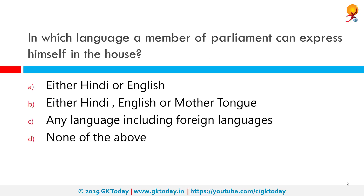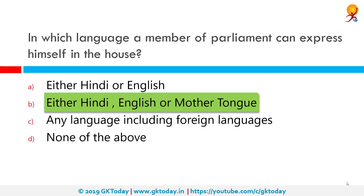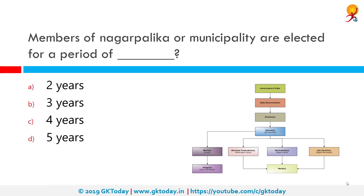In which language can a member of Parliament express himself or herself in the House? The correct answer is either Hindi, English, or their mother tongue. The Indian Constitution draws a distinction between the language used in parliamentary proceedings and the language in which laws are made. Parliamentary business may be conducted in Hindi or English, but a member of Parliament may speak in Hindi, English, or their mother tongue, in which case a translator is usually provided so the rest of the members can understand.